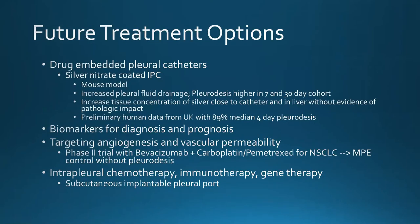Future treatment options for malignant pleural effusions include silver nitrate-coated indwelling pleural catheters to cause faster inflammatory response, biomarkers for diagnosis and prognosis, and potentially intrapleural chemotherapy or immunotherapy. A subcutaneous implantable pleural port for direct pleural space instillation of agents is also being studied.